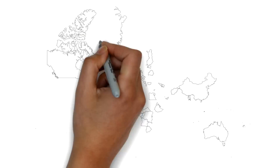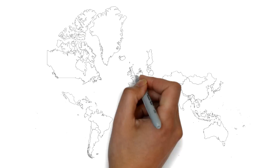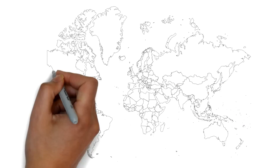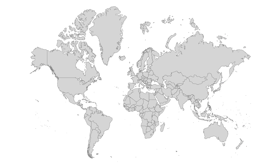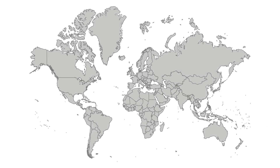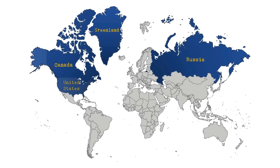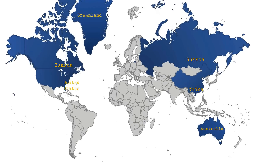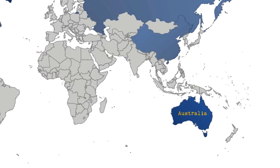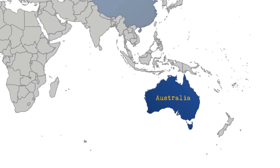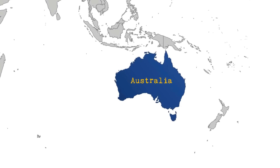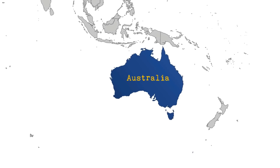The easiest way to get an idea of how big or small a country is is to just look at it on the world map. The largest looking countries on the world map are Russia, Canada, Greenland, United States, China and Australia, which is also considered as a continent because it is a very large contiguous landmass surrounded by ocean.